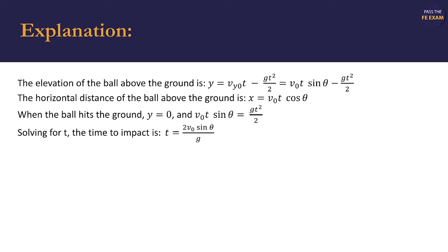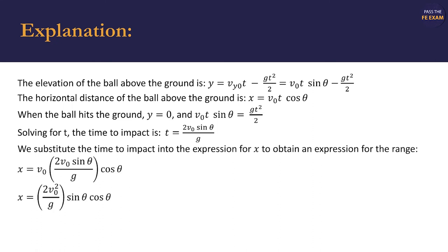Solving for T, the time to impact is T equals 2 V sub zero sine theta over G. We substitute the time to impact into the expression for X to obtain an expression for the range X equals V sub zero times 2 V sub zero sine of theta over G cosine theta. We can then simplify this to X equals 2 V sub zero squared over G times sine of theta times cosine of theta.